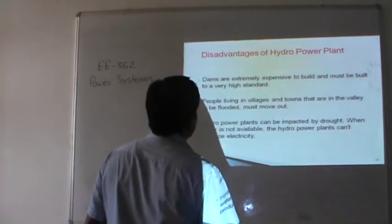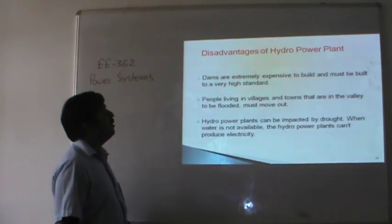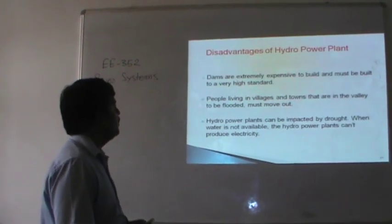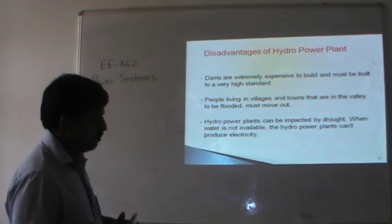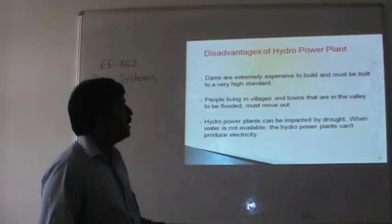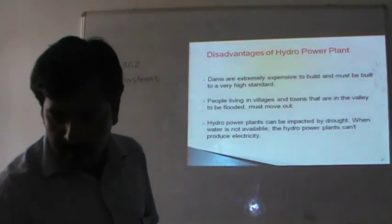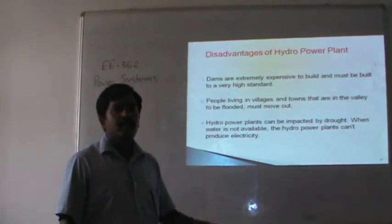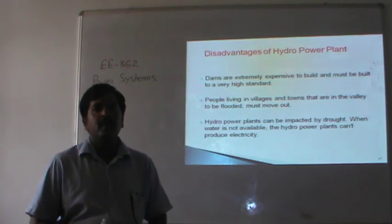Hydro power also has disadvantages: dams are extremely expensive to build and must be built to a very high standard. People in villages and towns in the valley to be flooded must move out, and rehabilitation is a tedious problem. Hydro power plants can be affected by droughts — when water is not available, they cannot produce electricity. These are the conventional power plants: thermal, nuclear, and hydro power plants.